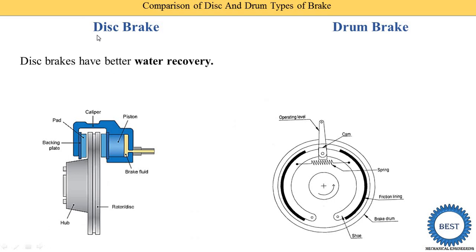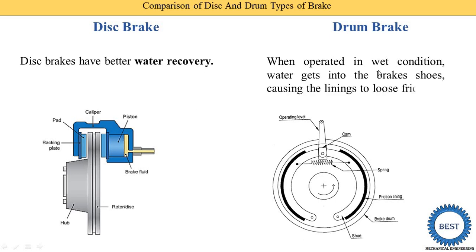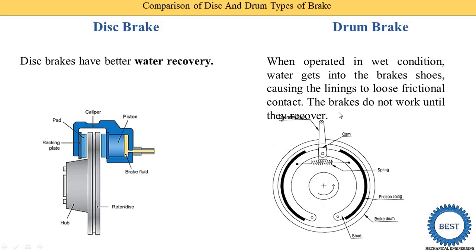The next comparison is on the basis of water recovery. In a disc brake, water recovery is better — when the brakes come into contact with water, they easily recover because the disc is open to the atmosphere. In a drum brake, when operated in wet conditions such as rainy season, water gets into the brake and causes the lining to lose frictional contact. The brakes do not work properly until the water is recovered.